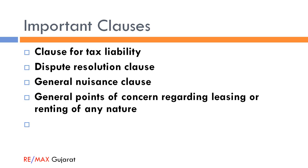In summary, we covered lease, tenancy, and leave and license agreements, the advantages of leave and license, and checklists to ensure an effective lease deed or leave and license agreement — including finding the actual owner, renting out mortgaged property, terms of the agreement, and important clauses to be included on a case-to-case basis. Thank you very much for your time.